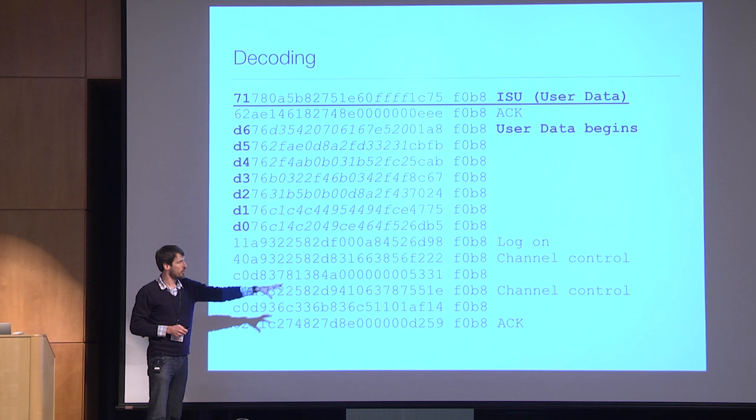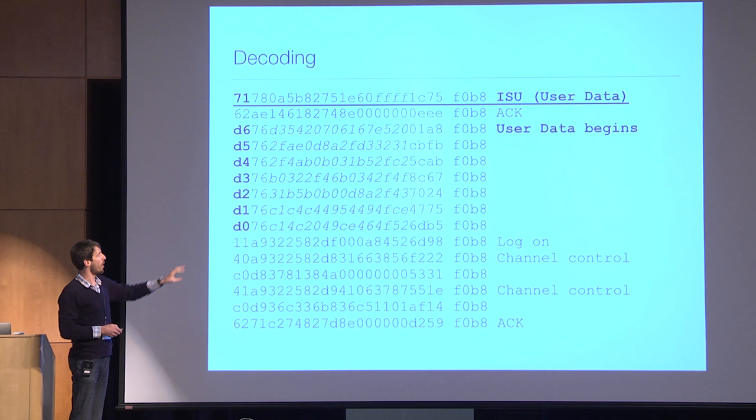The signaling units are often about channel control: units logging on, logging off, a reservation being made or released, a call in progress, and so on.